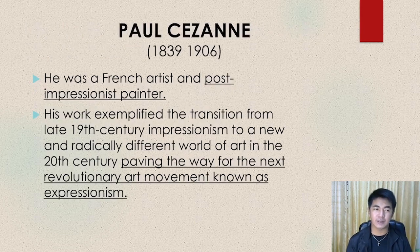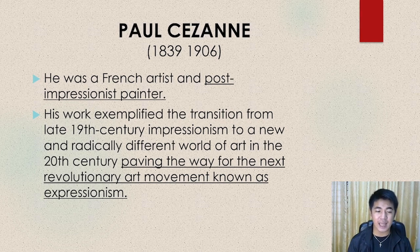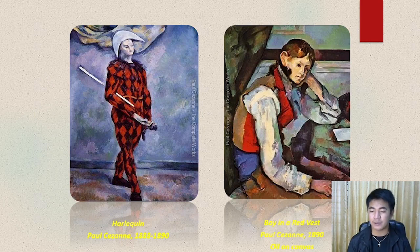Paul Cezanne. He was a French artist and post-impressionist painter. His work exemplified the transition from late 19th century impressionism to a new and radically different world of art in the 20th century, paving the way for the next revolutionary art movement known as expressionism. Here are some outputs of Cezanne: Harlequin and A Boy in a Red Vest.